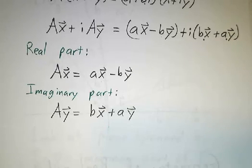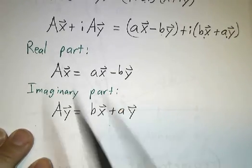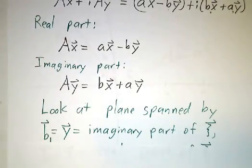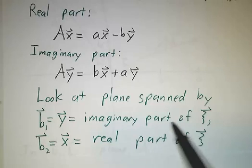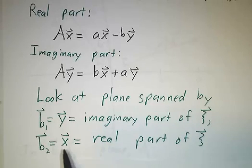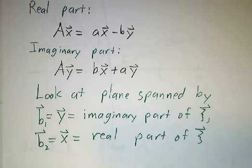Okay, so now what we're going to do is we're going to look at the plane spanned by x and y. Except actually, I'm going to take a basis where the first basis vector is y—it's the imaginary part of our eigenvector. The second basis vector is x—that's the real part of our eigenvector.